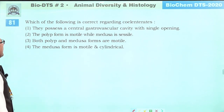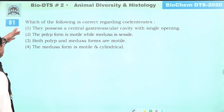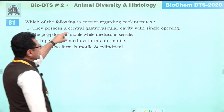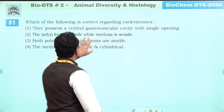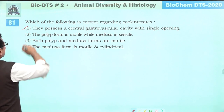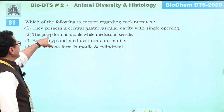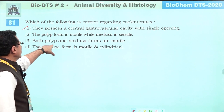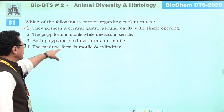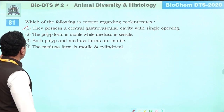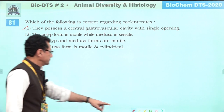What is correct regarding cnidarians? They possess a central gastrovascular cavity with a single opening — first answer is correct. Polyp is not motile. Both polyp and medusa are not both motile. Medusa is motile and bell-shaped (not cylindrical). Answer is one.